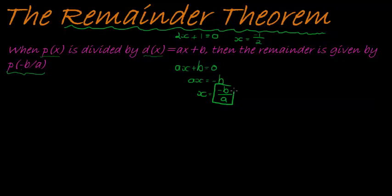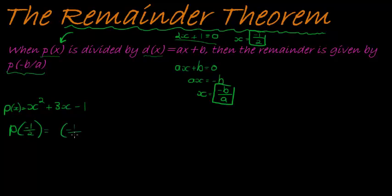Now, this negative b over a, if I take that value, for example, the negative 1 half, and I substitute it into the x of my polynomial, and simplify. Okay, so my polynomial might be something like x squared plus 3x minus 1. Okay, so that's my polynomial. If I now substitute this one, for example, in there, so take negative 1 half squared plus 3 times negative 1 half minus 1.